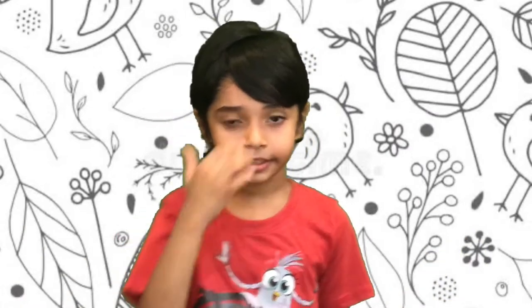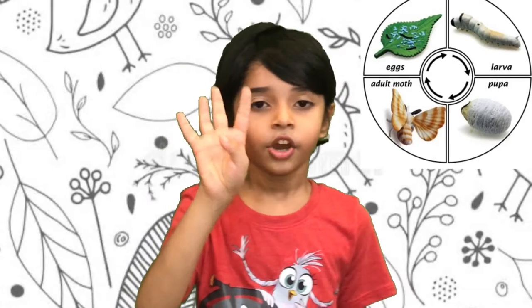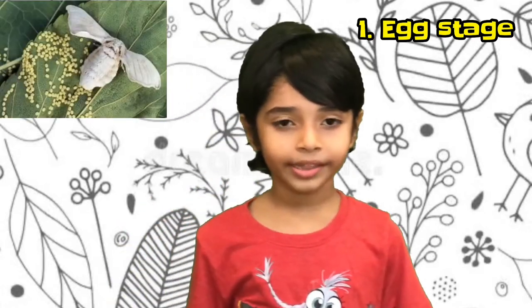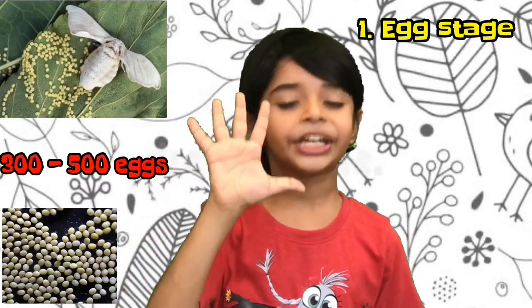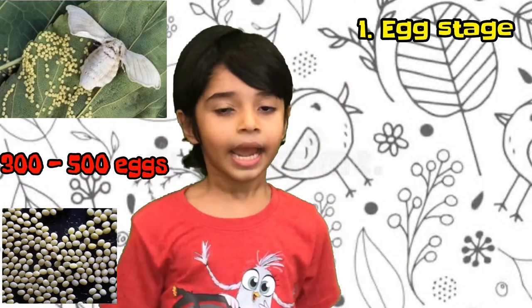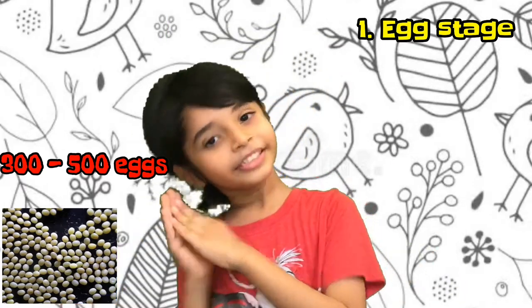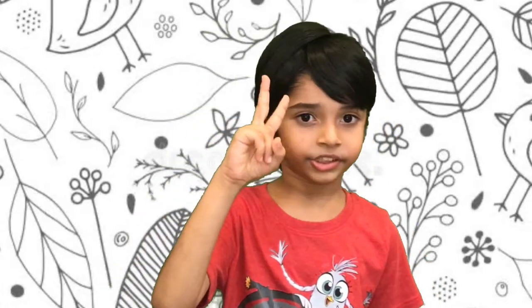My video today is on how silk is obtained. There are four stages from which silk is obtained. The first stage is the egg stage — a moth lays around 300 to 500 eggs and then dies. These are pinhead-sized eggs.